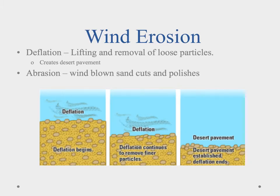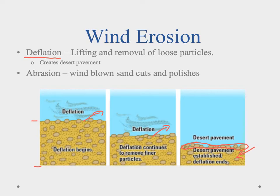Wind can also act as an agent of erosion, and it does so through two different processes. The first is deflation — lifting and removing loose particles. As the wind blows it picks up smaller particles and carries them away. What eventually happens is we end up with a lot of larger particles that form kind of a crust, and we call that desert pavement. The desert pavement protects what's below, and that's how we can get some desert soils to form. But if you break it, more deflation occurs and takes away more of those particles.